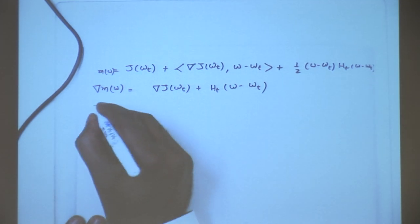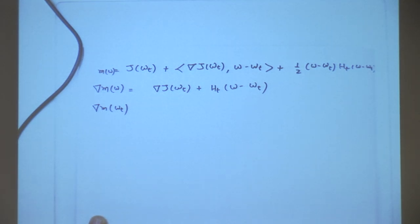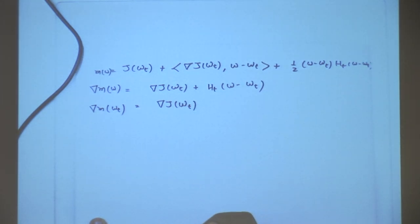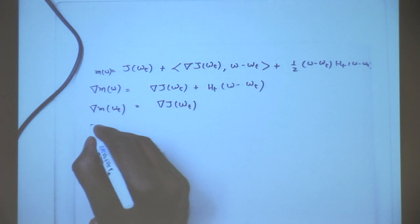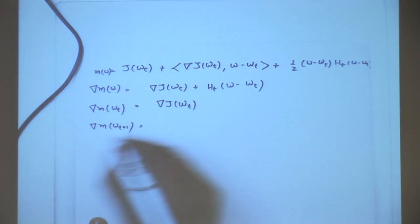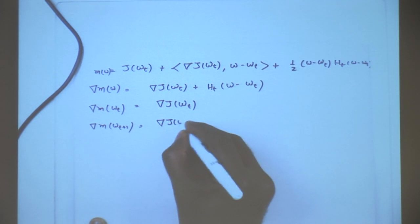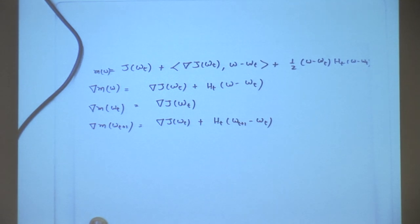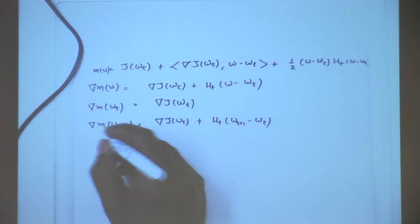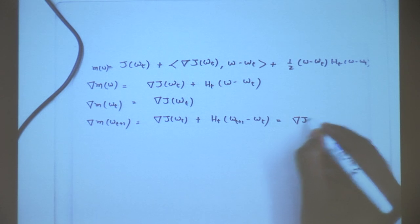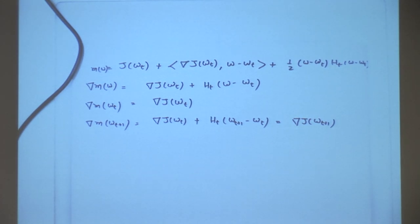If I evaluate this gradient at Wt, I clearly get back the gradient of my function. Now if I evaluate the gradient of this model at Wt+1, I get: gradient of J at Wt plus Ht times (Wt+1 minus Wt). One of the things BFGS assumes is that the gradient of the model at Wt+1 must match the gradient of the objective function at Wt+1 — this is a modeling assumption.